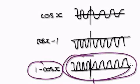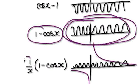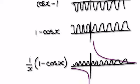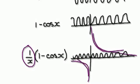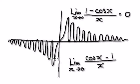So 1 minus cos(x) is this graph here. Now visualize it as a reciprocal here multiplying the above graph. Your 1 minus cos(x) will look something like this, and your reciprocal will look something like this. When you merge the two together, it will look roughly something like this. You can see that it's heading towards 0 as x approaches 0.